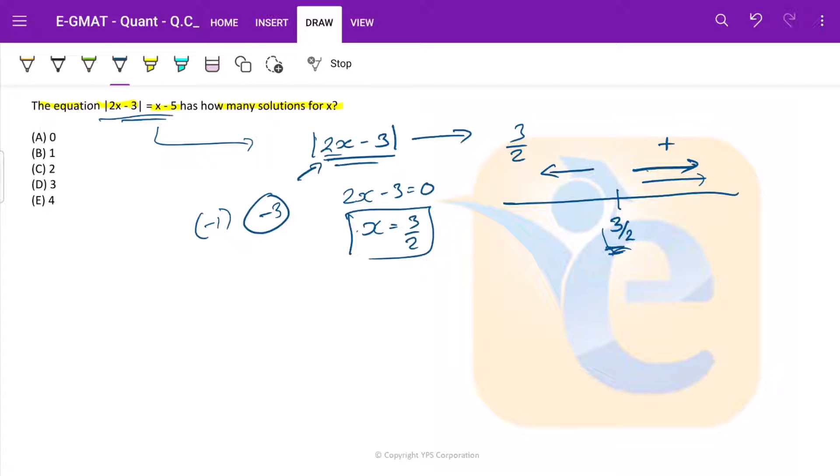So we need to multiply it by -1. The equation would be 2x - 3 = x - 5 on this side of the equation and 3 - 2x = x - 5 on this side of our number line. I have just multiplied this by negative 1, so the signs get interchanged. Now with this done, let us move to the next step.